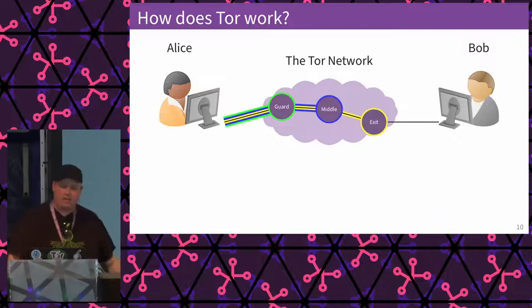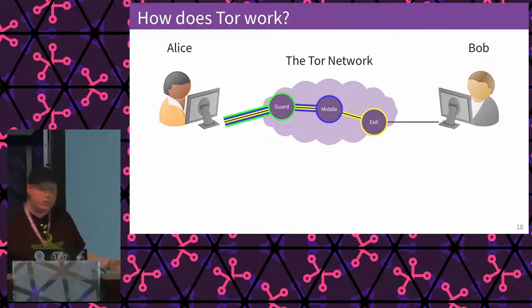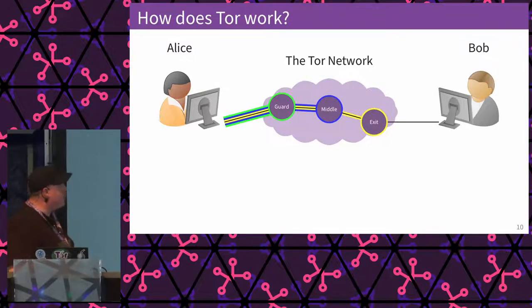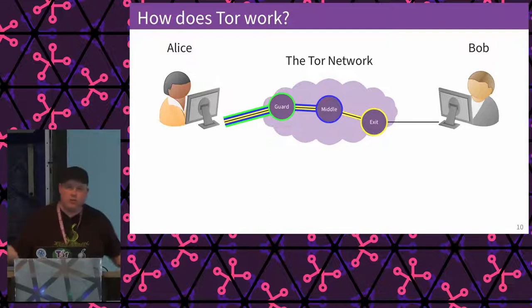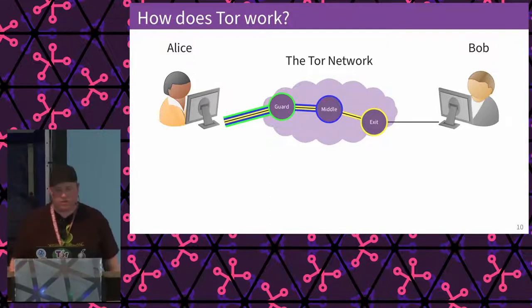Usually when we talk about these three nodes, the first one we call a guard node, the second a middle node, and the third is the exit node. We also have something called onion services — basically, you eliminate the exit node, add another node, and mirror the entire setup on the other side, because onion services are services that exist only within the Tor network itself.